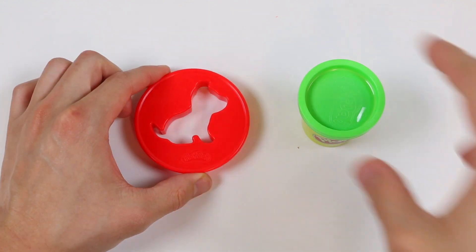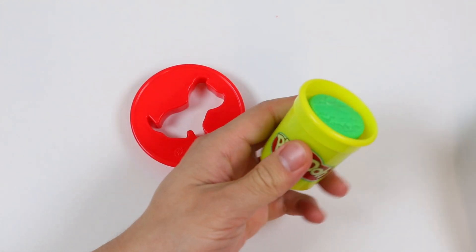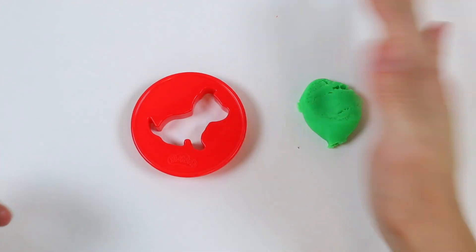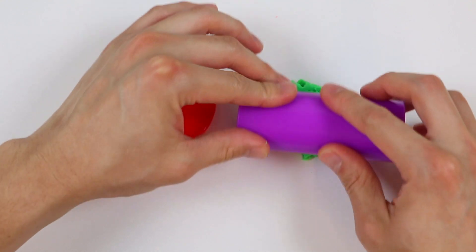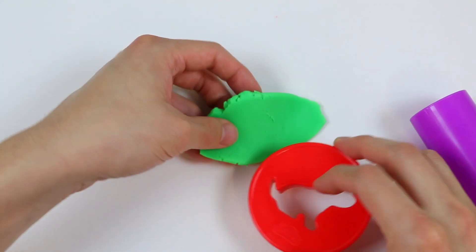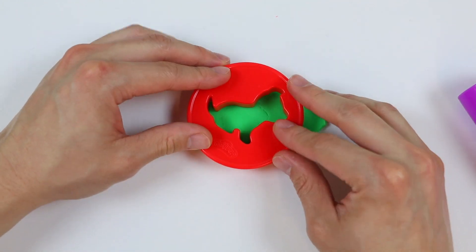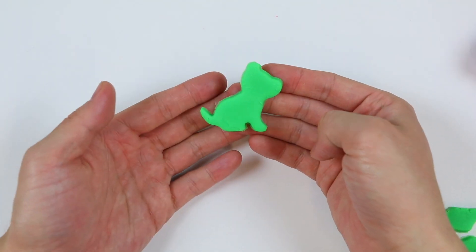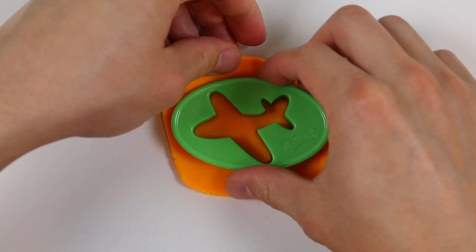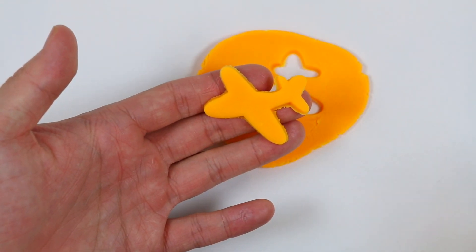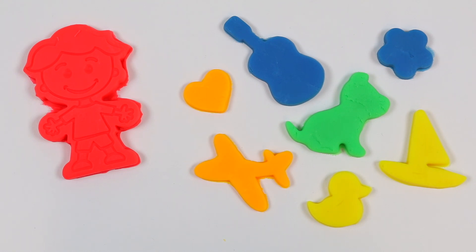Now let's make a trusty companion for our first character. We'll use some green play-doh. Use the roller again, use the theme cutter. And we made a green dog. Now here's an orange airplane. And I went ahead and made a few more shapes. Let's put our thinking caps on and get creative.